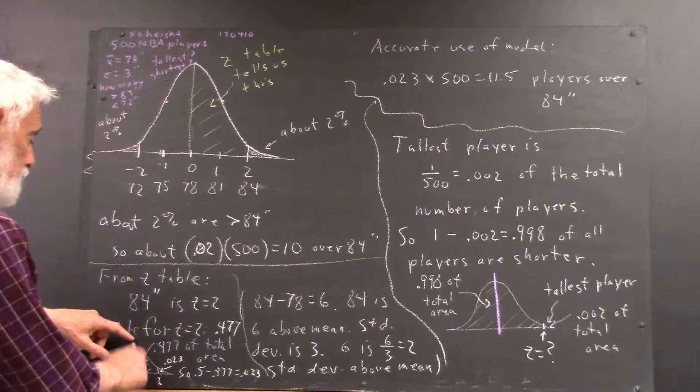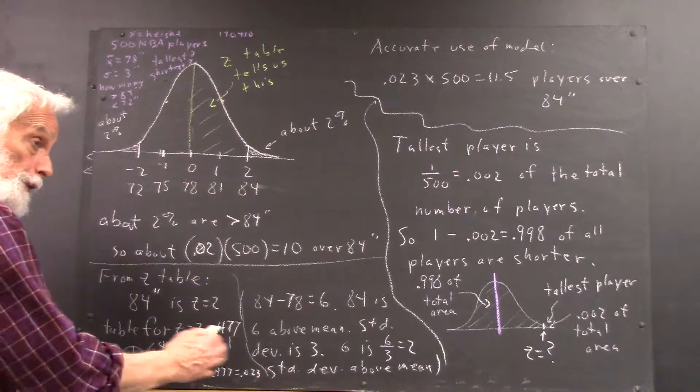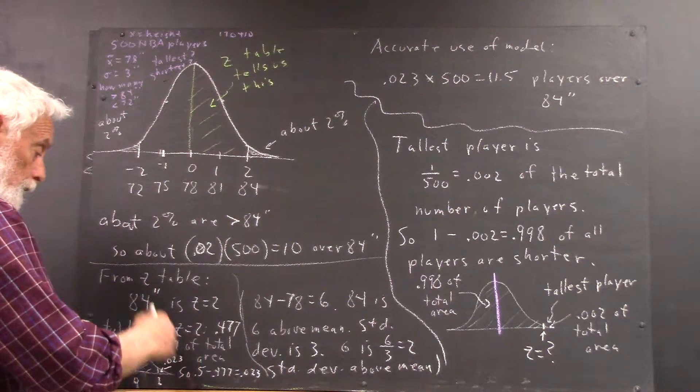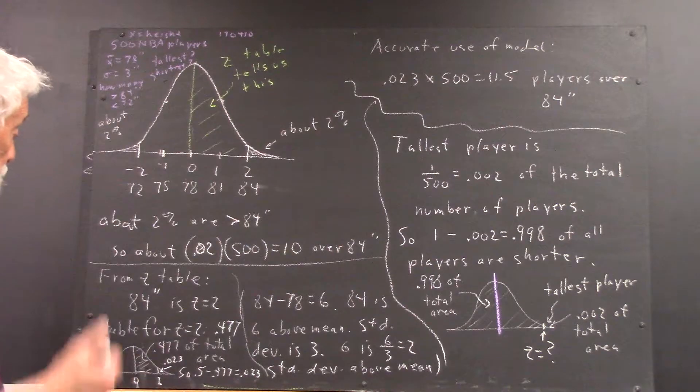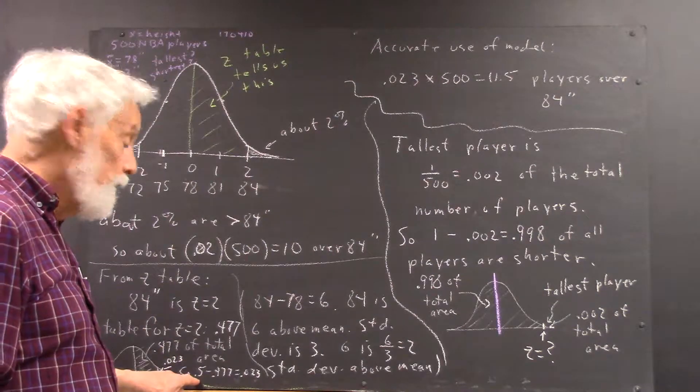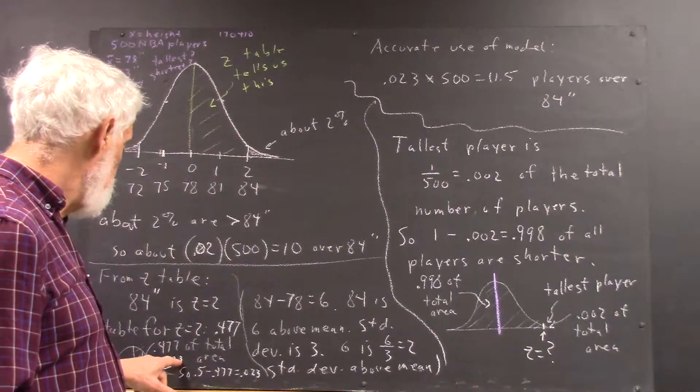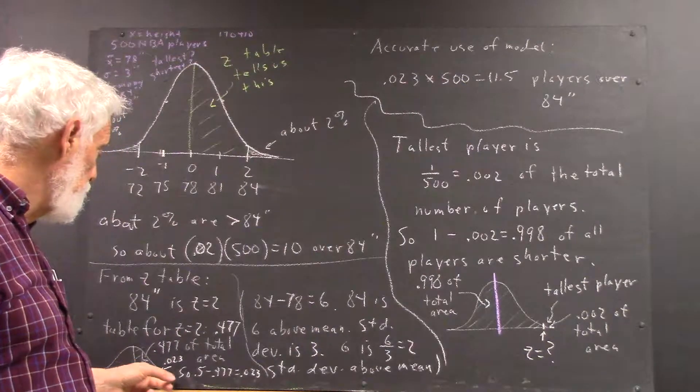From the middle on to forever, you have half of the area because the middle divides the curve evenly in half, the curve being completely symmetric. If you subtract the 0.477 from 0.5, which is a half, you get 0.023. So you have 0.023 of the area from here to here.